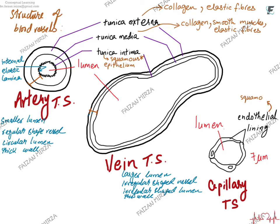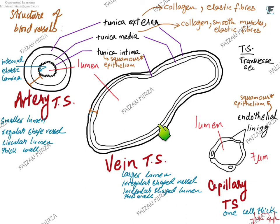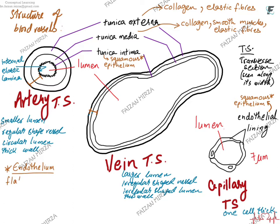The endothelium and squamous epithelium are essentially the same thing. Endothelial cells are flattened, jigsaw-puzzle-shaped cells that fit into each other. They provide a frictionless pathway for blood to flow swiftly along the vessel. In the capillary, this lining is one cell thick. In arteries and veins, multiple layers are superimposed, making for a thicker vessel wall.